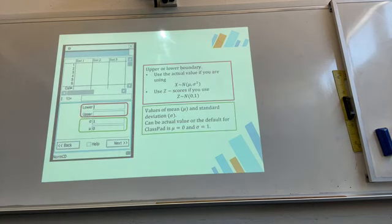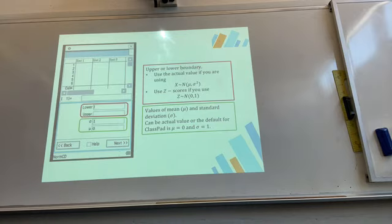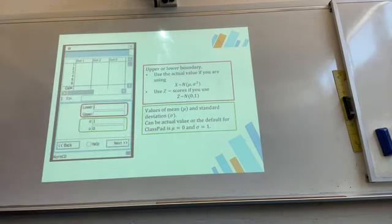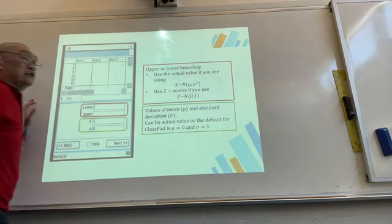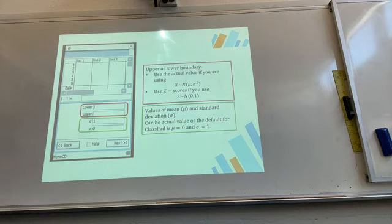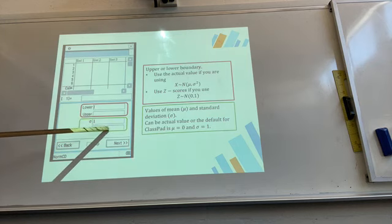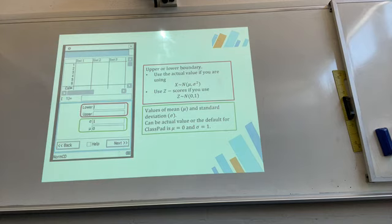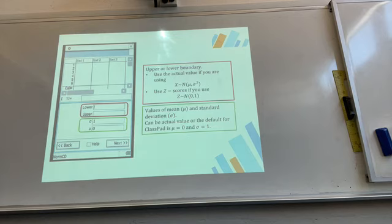For the lower and upper boundary, use actual values if you're using the actual mean and standard deviation. Use z-scores if you're using the standard normal distribution. The ClassPad default is the standard normal distribution. Also, be careful — the ClassPad asks for sigma before mu. I've made many mistakes by entering the mean first. Remember: sigma first, then mu.